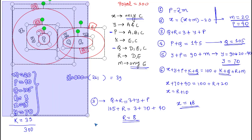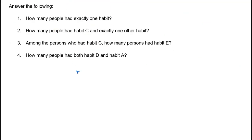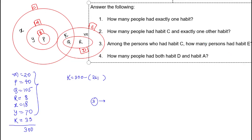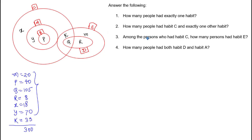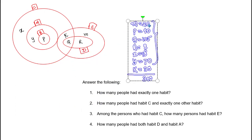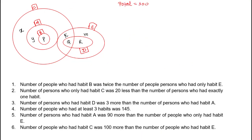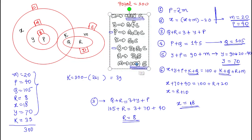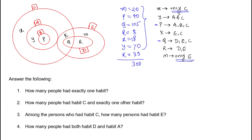Now let's go to the questions. Question 1: how many people are having exactly one habit? Exactly one habit means x + m. The value of x is 18 and m is 20, so the answer is 38.